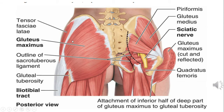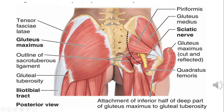There are four superficial and four deep muscles of the gluteal region, giving us eight muscles total. The superficial muscles are gluteus maximus, tensor fascia lata, gluteus medius, and gluteus minimus. The deep muscles include piriformis above the sciatic nerve, and below the sciatic nerve: the two gemelli, obturator internus, and quadratus femoris.